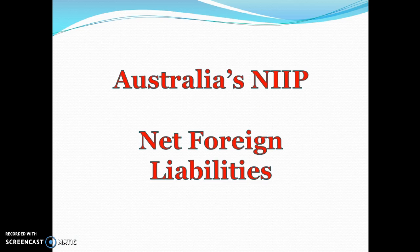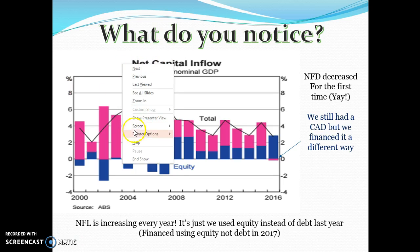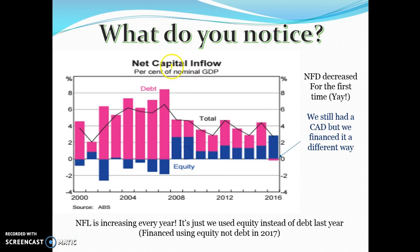When talking about net foreign liabilities, this graph is showing our net capital inflow — the difference between money coming into the financial account and out of the financial account in a given year. The pink line being above zero is a sign that in that given year we were issuing more debt, or borrowing more than we were lending.